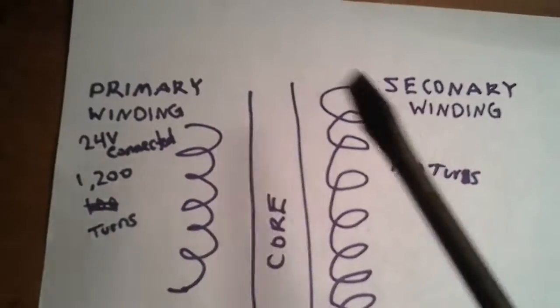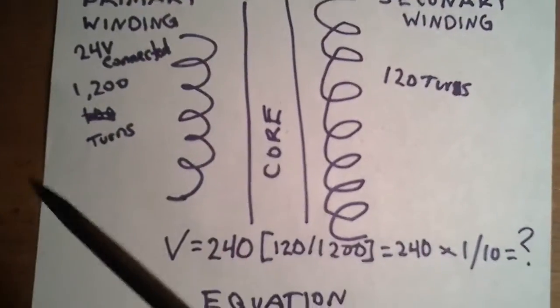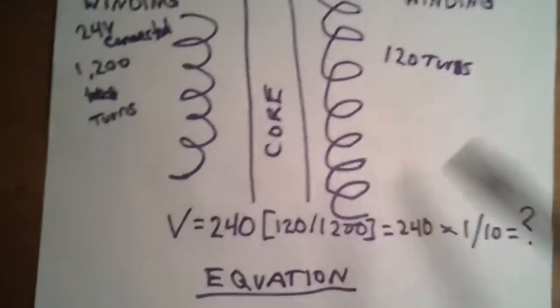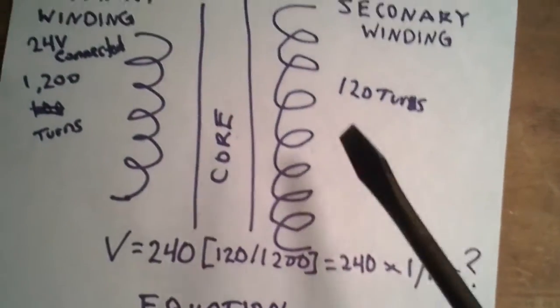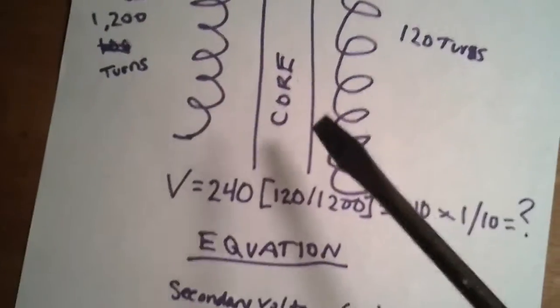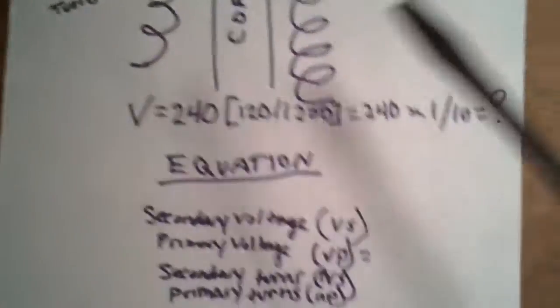This is basically how a basic transformer works. Primary winding, secondary. Secondary is the output, primary is the input. Both the copper wire, or the windings, the wire that makes up the actual winding, is on an iron core. It's separated by an iron core.